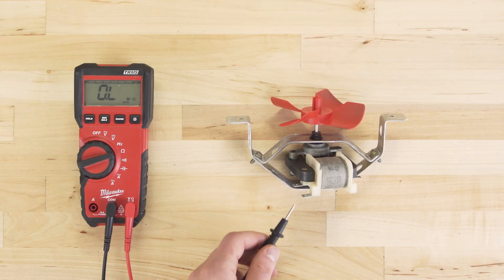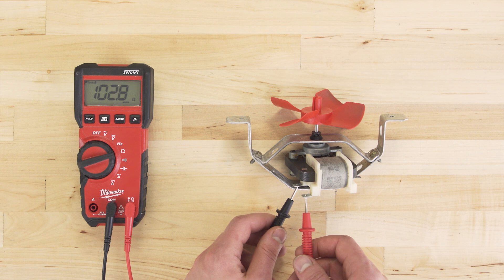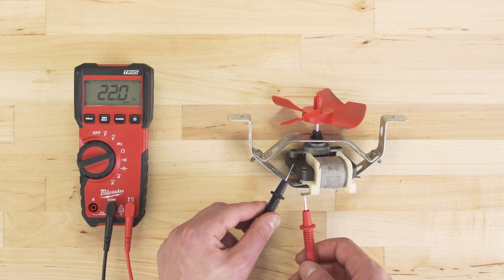Next, check the motor windings for continuity. Without continuity, there will be no magnetic field. As well, you can check to see if the motor is shorted to ground. Simply test from the terminals to any metal on the frame. If there's continuity, then the motor is shorted and will need to be replaced.